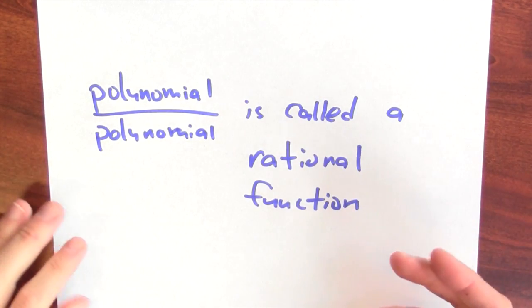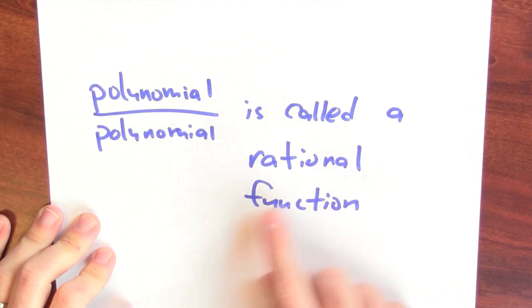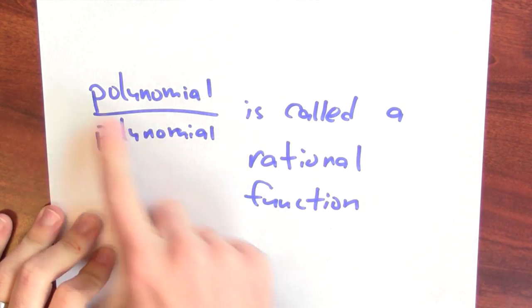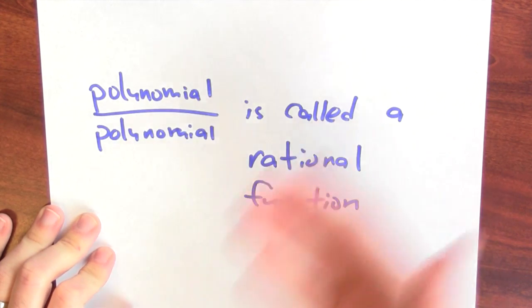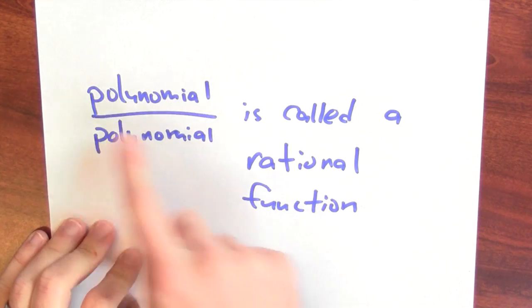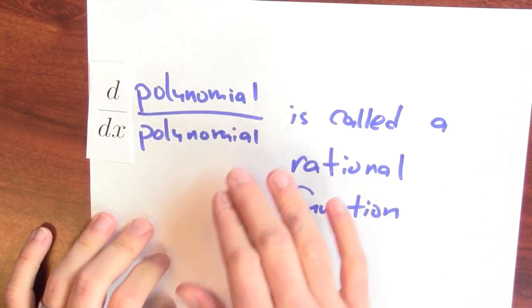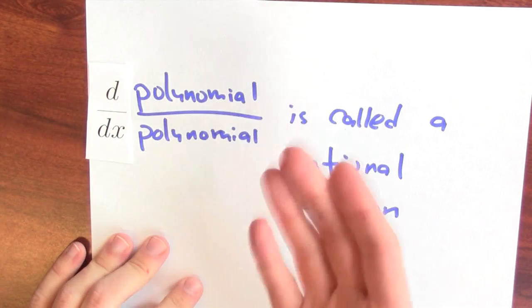What sorts of functions can we differentiate using all of these rules? Well, here's one big collection. If you've got a polynomial divided by a polynomial, these things are called rational functions. Sort of an analogy with rational numbers, which are integers over integers. A polynomial over a polynomial is, by analogy, being called a rational function. Now, since this is just a quotient of two things you can differentiate, you can differentiate these rational functions. This is a huge class of functions that you can now differentiate. I encourage you to practice with the quotient rule. With some practice, you'll be able to differentiate any rational function that we can throw at you.